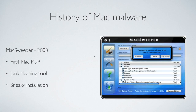In 2008, a program called MacSweeper appeared — no relation to Mac Keeper — and this was really the first Mac PUP, or potentially unwanted program. We see these a lot now: things like Mac Keeper, Advanced Mac Cleaner. This was the first one — we had never seen a PUP on Mac OS before. Like all its successors, it was a junk cleaning tool that used scare tactics to convince you your system was in terrible shape and that you had to buy it. It also used sneaky methods for getting installed without user consent.